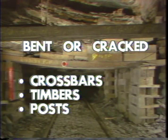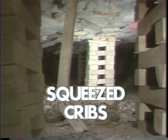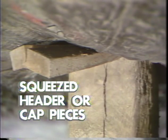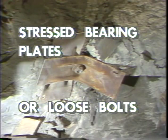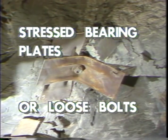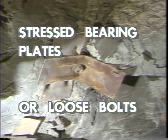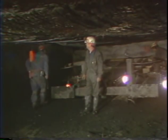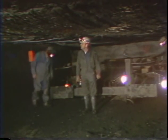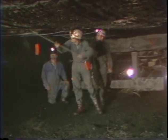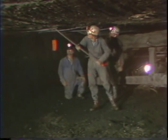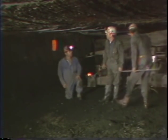In supported areas, you should visually inspect for crossbars, timbers, and posts that are bent or cracked from heavy pressure. Look for the squeezing of cribs, header or cap pieces squeezed down and over posts, and notice if there are any timbers that have decayed or become unsafe. If the area is roof bolted, check to see if the roof bolt bearing plates show signs of stress, or if any of the bolts have worked out. Knowledge of rock structures, mine roofs, and the reason roofs fall will help you identify potentially hazardous roof conditions and will help you make accurate roof evaluations. The next step is to make the proper decisions on what you do as a result of your evaluations.